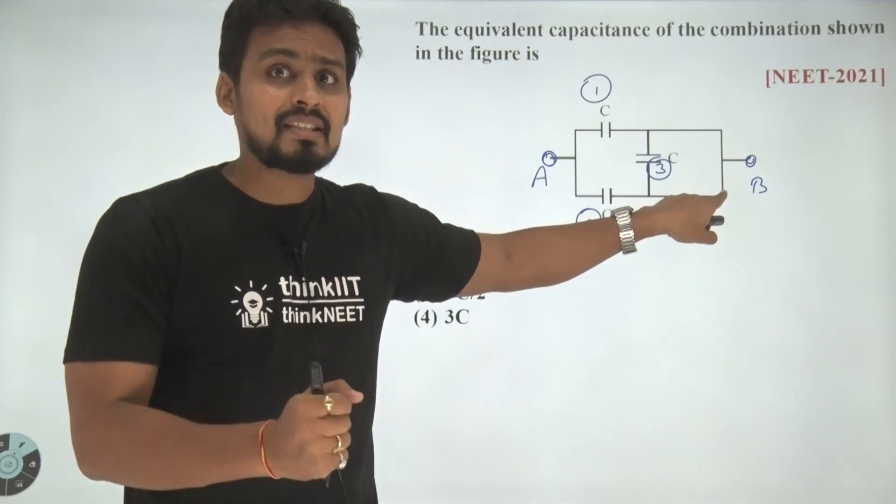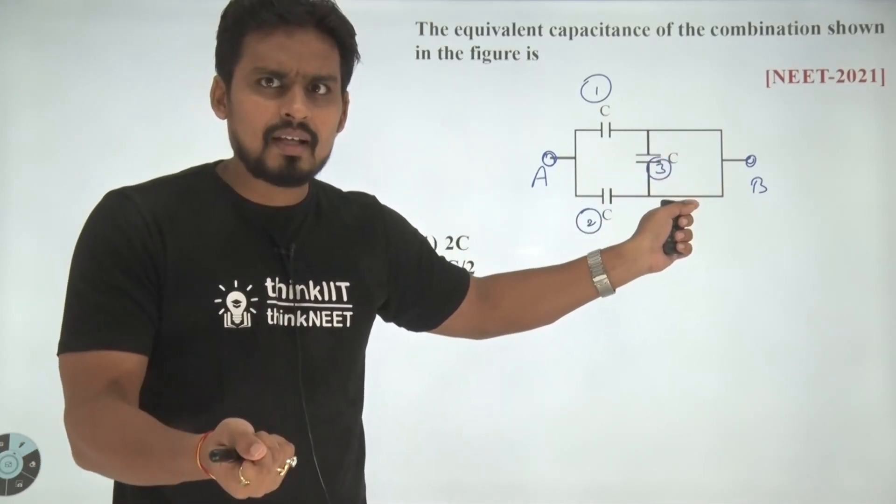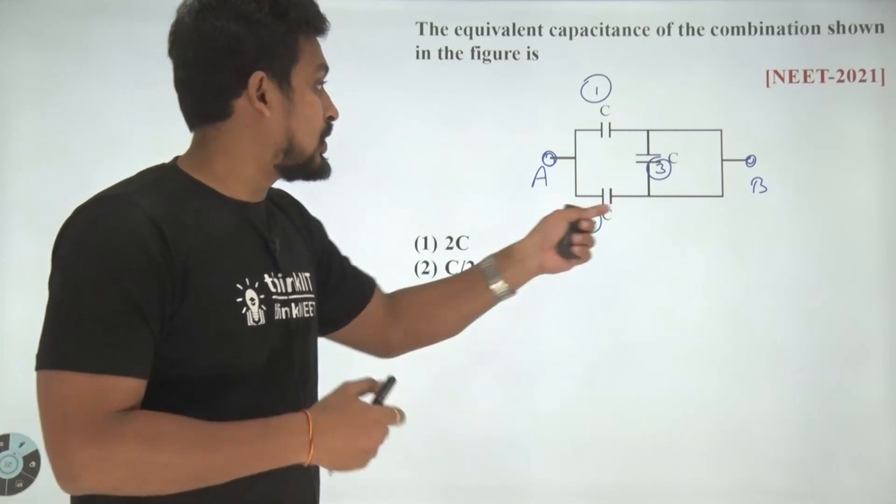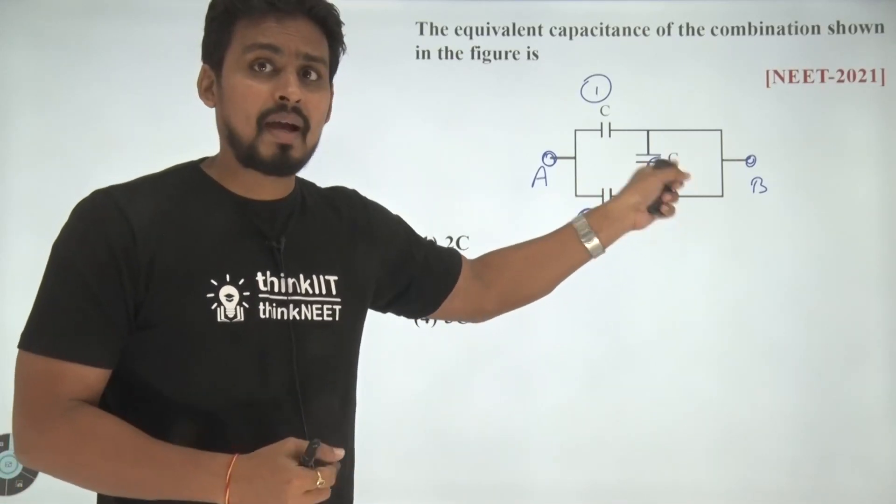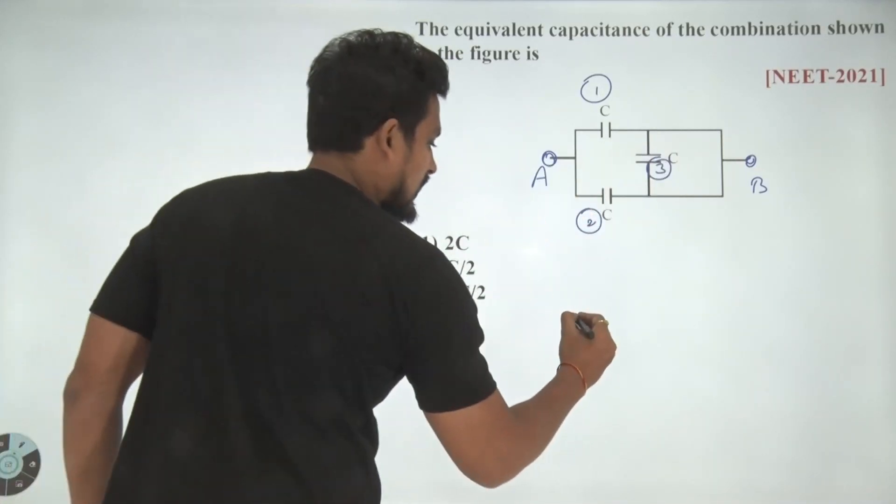Because both the terminals are connected to the same point. Therefore, the calculation of equivalent capacitance would not be affected or would not be contributed by the third capacitor.